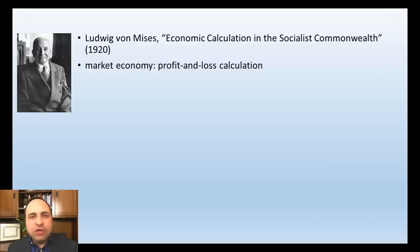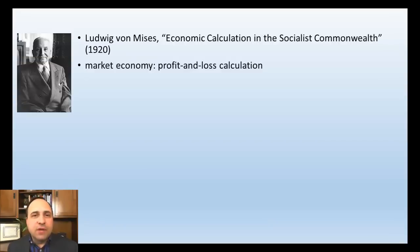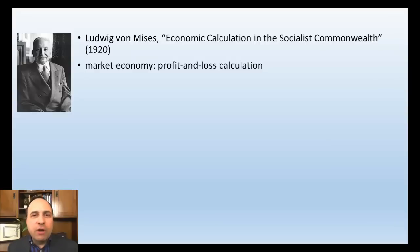In a classically socialist economy, the means of production are owned by the government. Today we use the word socialism loosely — people say Sweden is socialist, but it's not. Sweden has a large government budget and a substantial welfare state, but it does not have government ownership of the means of production. Mises is talking about socialism as real socialists envisioned it, and he argues there is a fatal flaw in the system.